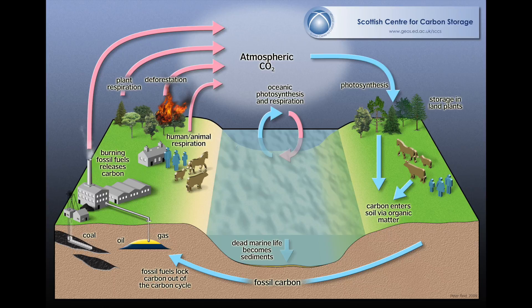We're going to start off — you can start anywhere — but we're going to start off when an insect, an animal, or a plant dies. What happens is the microorganisms feed on this dead plant, insect, or animal, and then they release carbon through respiration. So these microorganisms are the things that are releasing carbon through respiration.